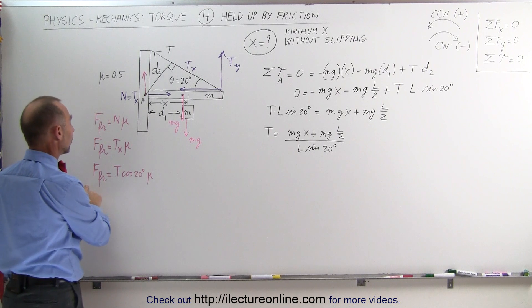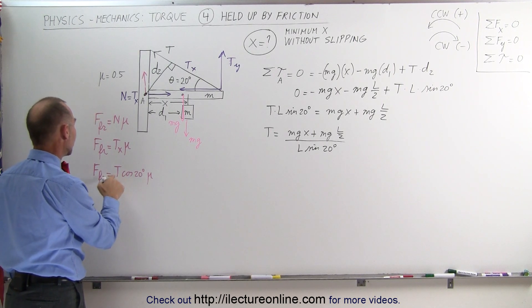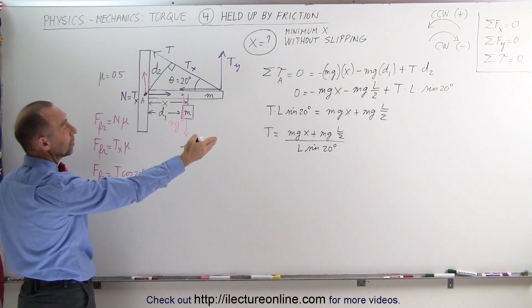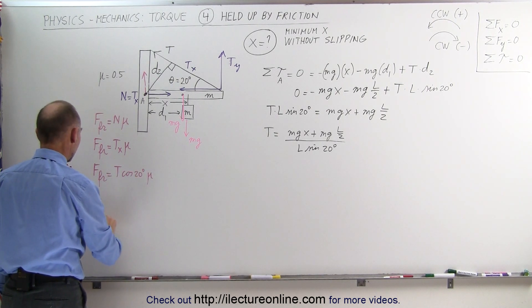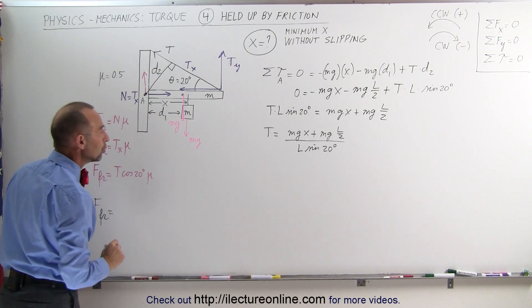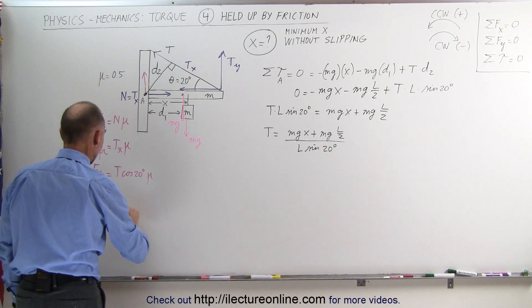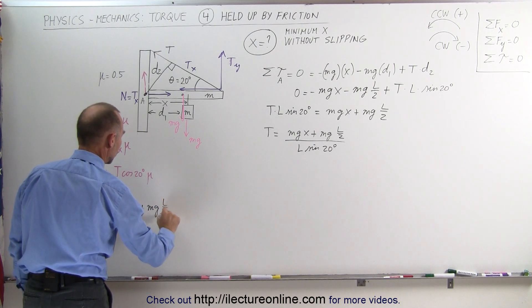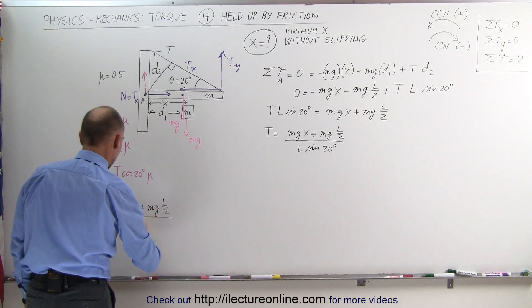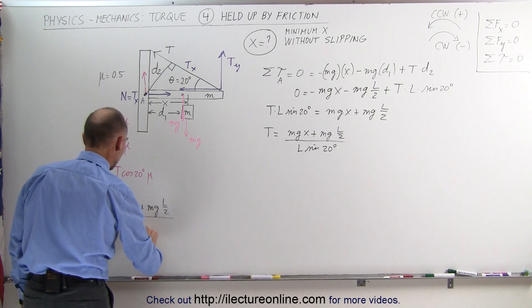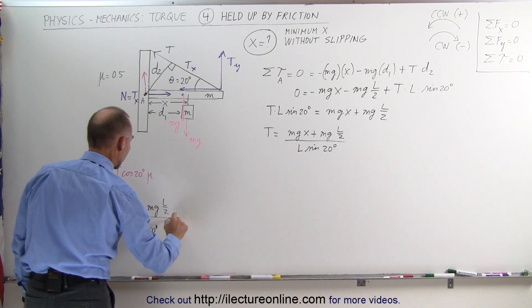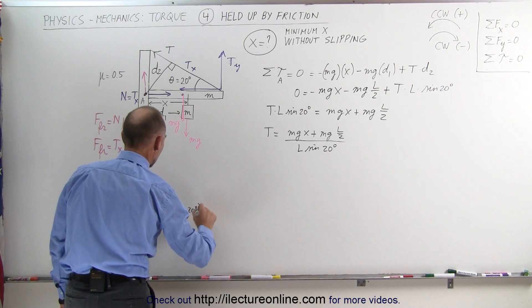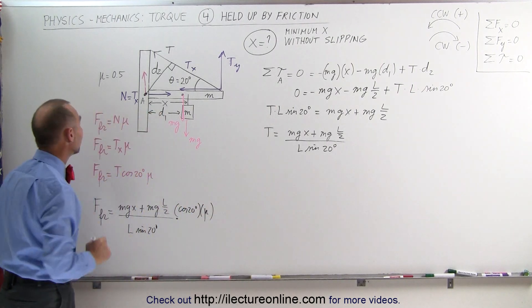Now we can find the friction force. The friction force equals T times cosine(20°) times mu. Substituting our expression for T, the friction force equals mg·(x + L/2) times cosine(20°) times mu, all divided by L times sine(20 degrees).